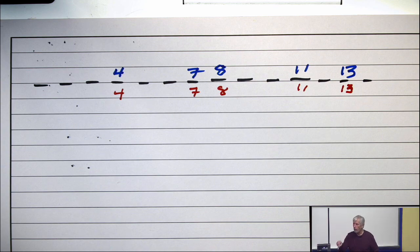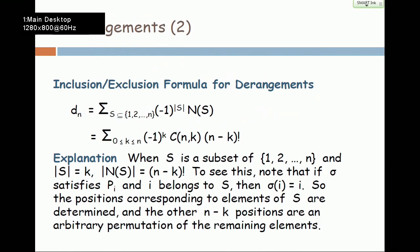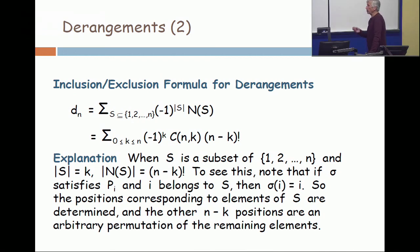9 factorial because you can do anything you want with the other 9 symbols. Those are frozen. Those are fixed. The others are arbitrary. And so I write in this explanation at the bottom. When you have a set of size K, then the number of permutations which satisfy all the properties in your set is n minus K factorial. And therefore,